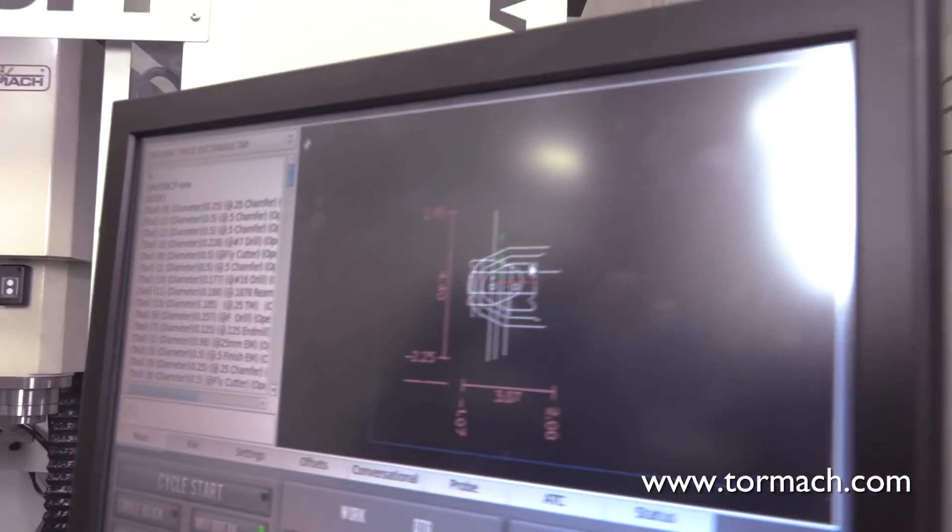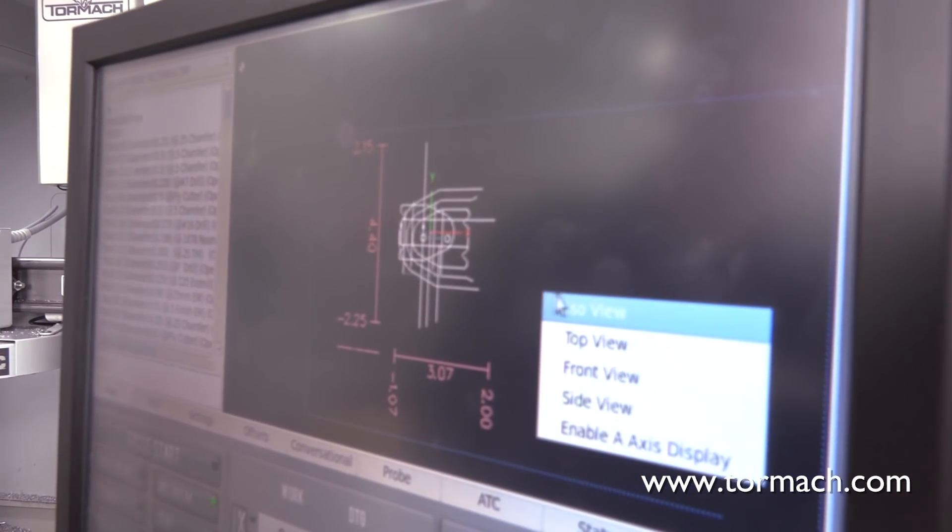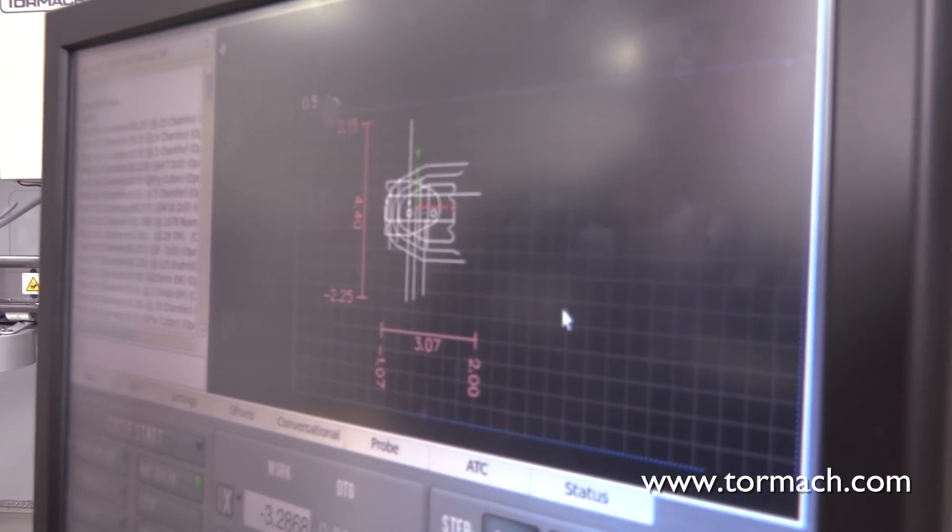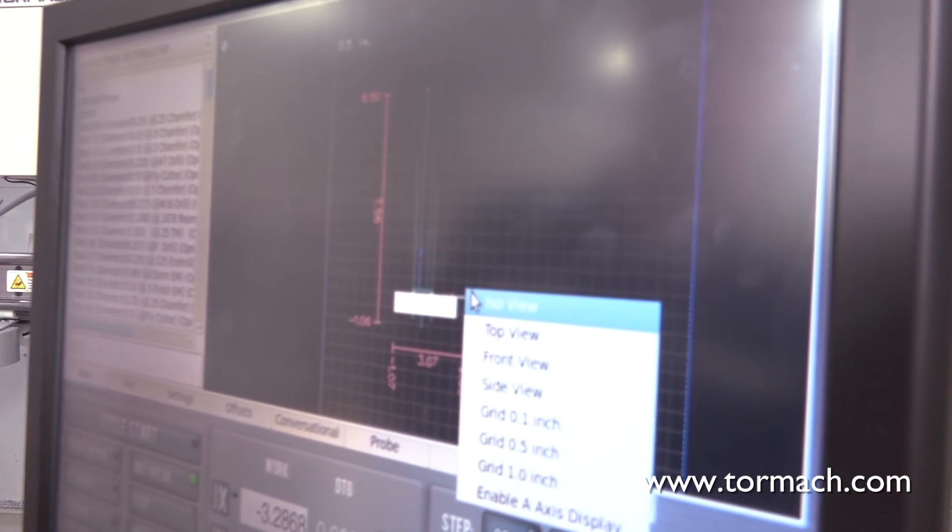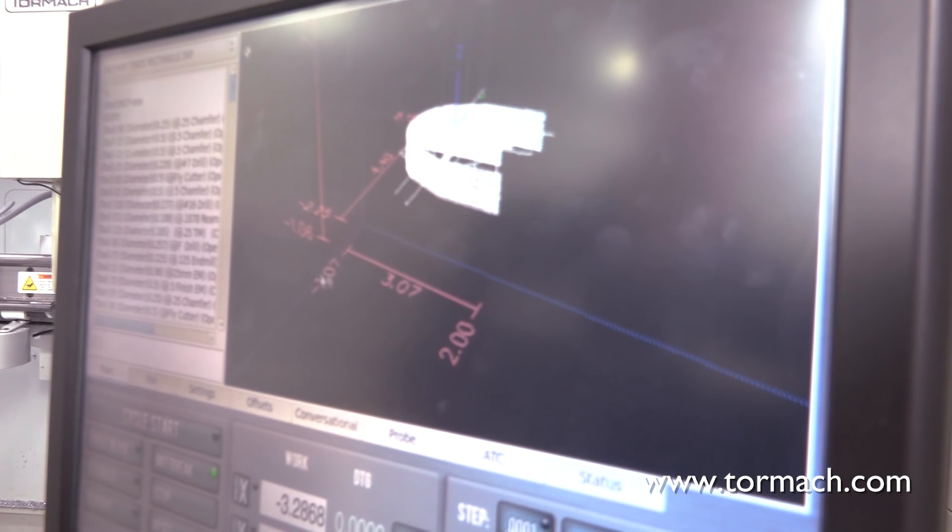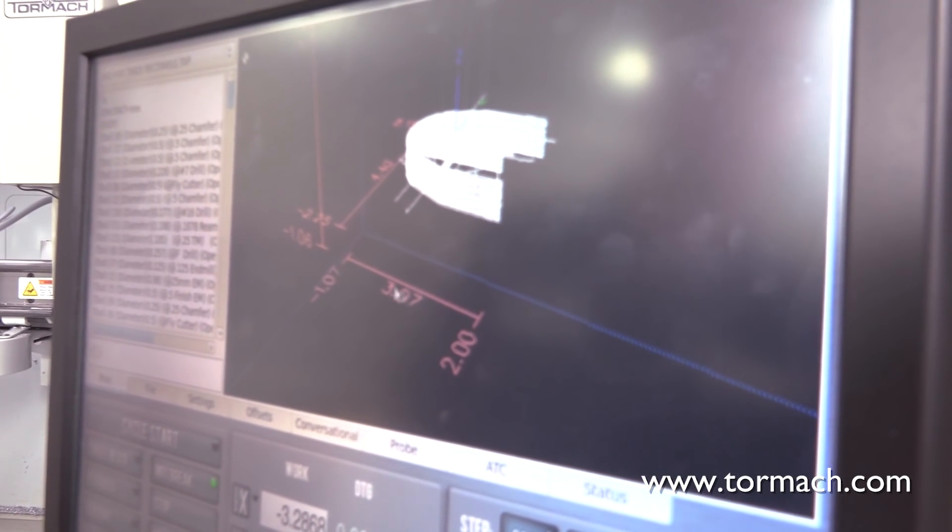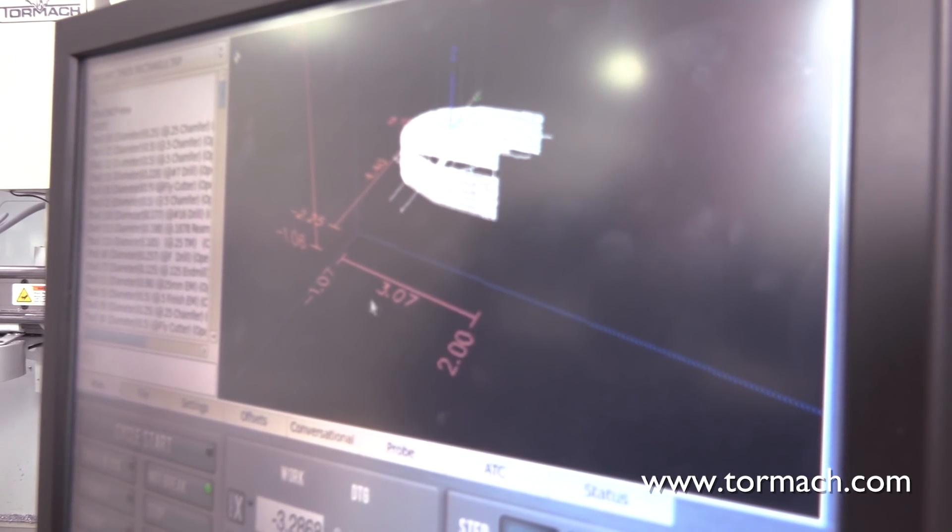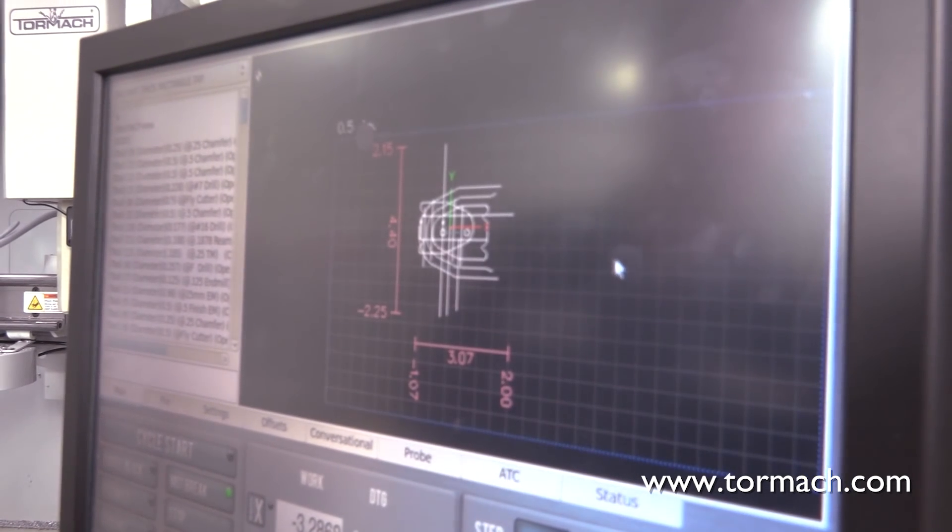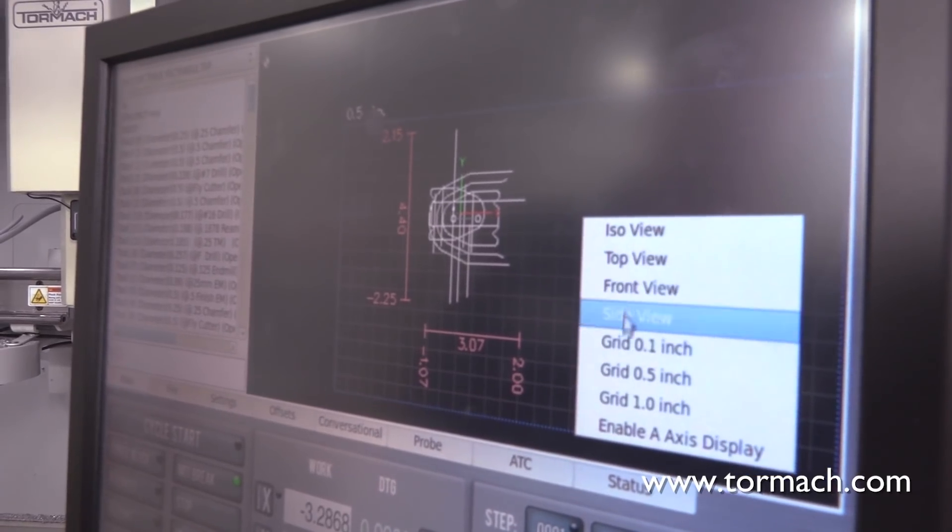This is the toolpath display. You can right-click in here to choose different views. We have an isometric view, you see a top view, front view. I like the isometric view. It gives you a good idea of what's going to happen. Also, you'll see that the extents of travel, how far the machine will have to move in order to execute this program listed, which is pretty handy. And there are a few other things here that are discussed in the manual that you can change the grid spacing, stuff like that.